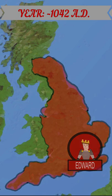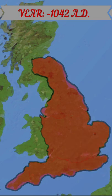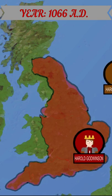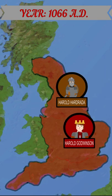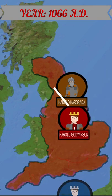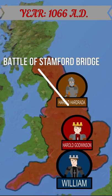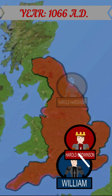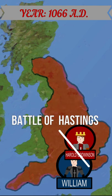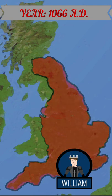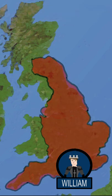Edward had no clear heir, and his death in 1066 sparked a war for the English throne. Harold Godwinson proclaimed himself king and defeated another claimant, Harold Hardrada, at the Battle of Stamford Bridge. Duke William of Normandy then defeated Godwinson at the Battle of Hastings, becoming King of England.